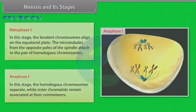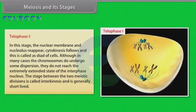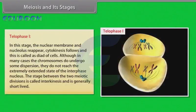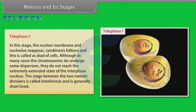Anaphase one is followed by telophase one. In this stage, the nuclear membrane and nucleolus reappear. Cytokinesis follows and this is called dyad of cells. Although in many cases the chromosomes do undergo some dispersion, they do not reach the extremely extended state of the interphase nucleus. The stage between the two meiotic divisions is called interkinesis and is generally short-lived. Interkinesis is followed by prophase two.